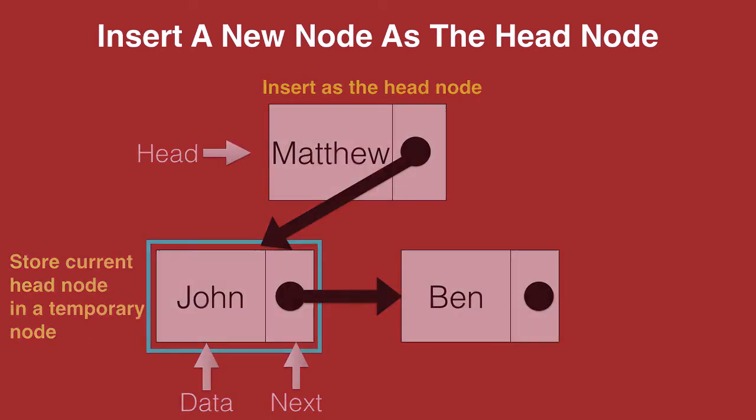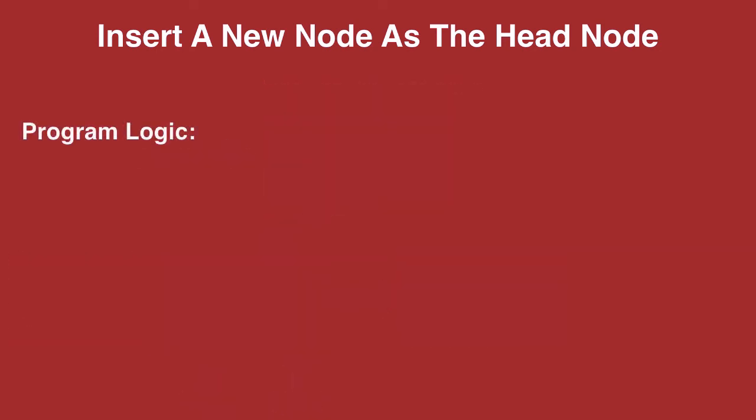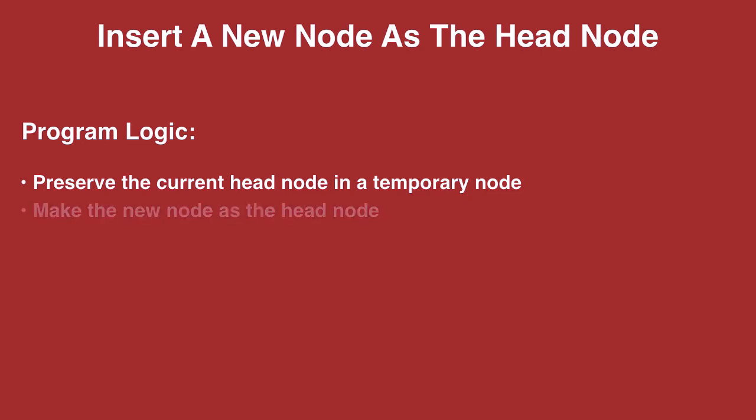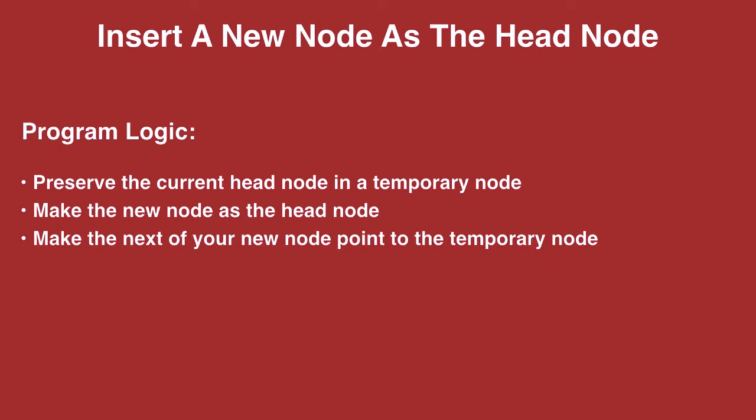Let's now list down the steps of the program logic. We first need to preserve the current head node in a temporary node. Once we do that we need to make the new node as the head node and the next of the new node points to the temporary node.